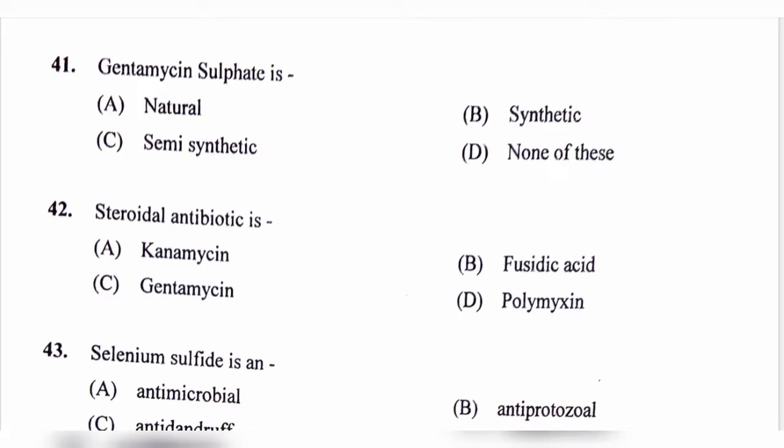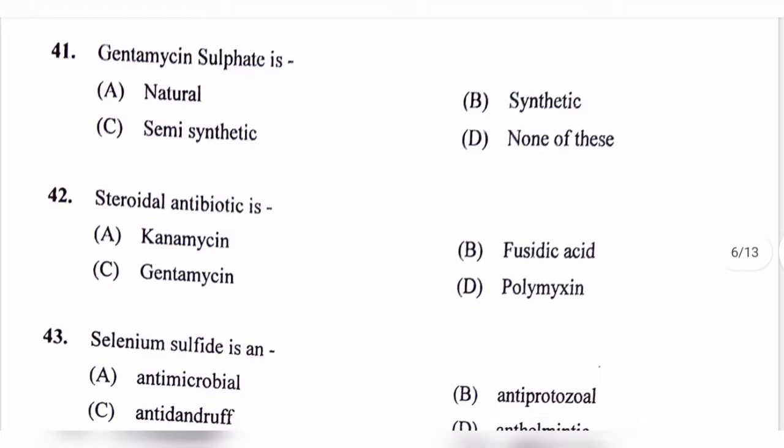Question number 41. Gentamicin sulfate is: option A, Natural; option B, Synthetic; option C, Semisynthetic; option D, None of these. The correct answer is option C, Semisynthetic. Gentamicin sulfate is an aminoglycoside antibiotic.